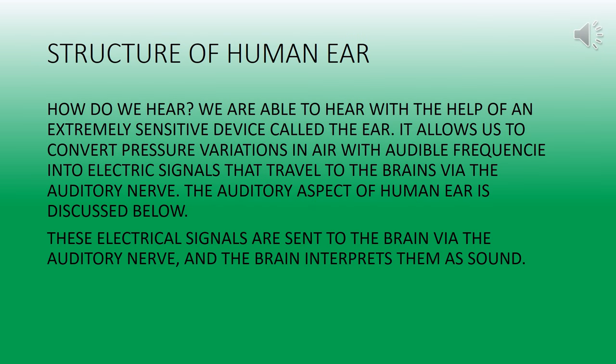Structure of the Human Ear — How do we hear? We are able to hear with the help of an extremely sensitive device called the ear. It allows us to convert pressure variations in air with audible frequency into electric signals that travel to the brain via the auditory nerve.